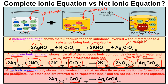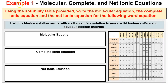So we end up with three representations: a molecular equation, a complete ionic equation, and a net ionic equation. Now let's try a couple of examples. Using the solubility table provided, we need to write the molecular equation, the complete ionic equation, and the net ionic equation for this word equation: barium chloride solution reacts with sodium sulfate solution. Barium is a 2+ ion, chloride is Cl⁻, so we need BaCl₂ aqueous.